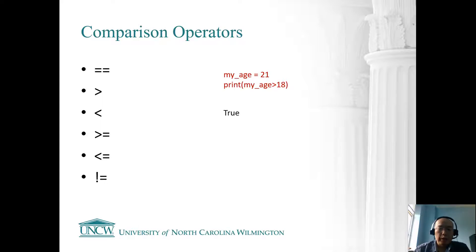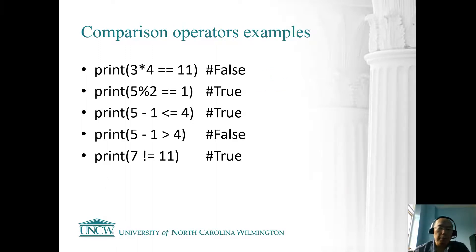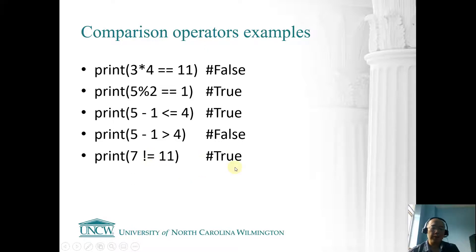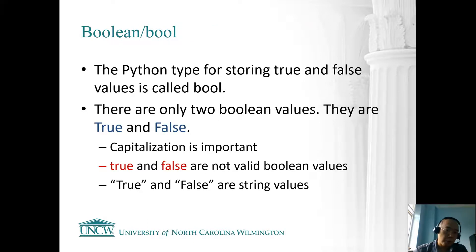This true is a boolean — the statement is evaluated to be true in Python. We can do more comparisons: 3 multiplied by 4 is 12, so 12 equals equals 11 is false because those two values are not the same. And 7 not equals 11 is true. Sooner or later you will find out there are only two possible values: true and false. By using comparison operators you can only get those two values.